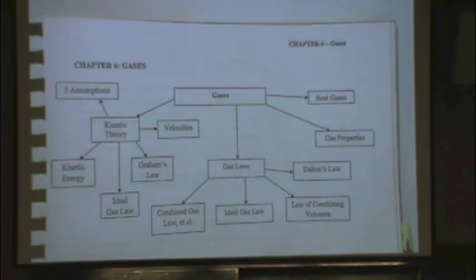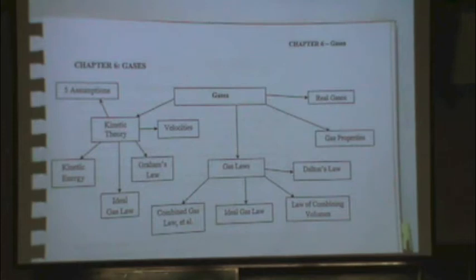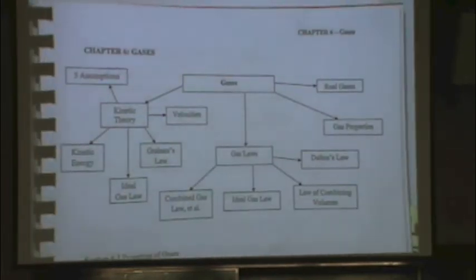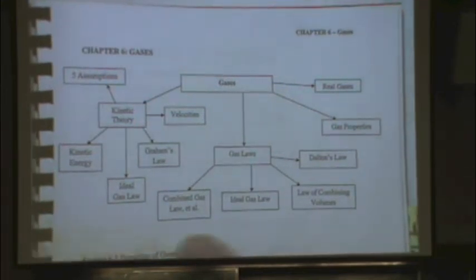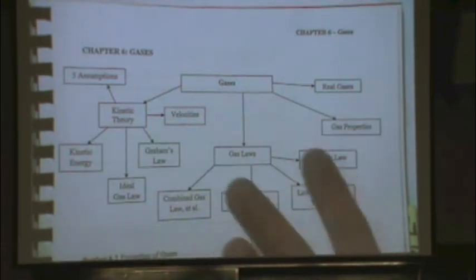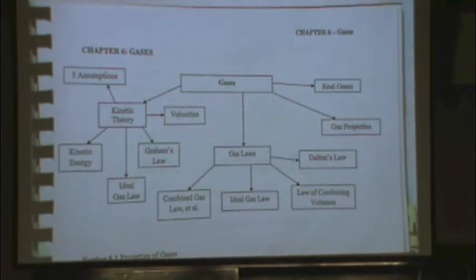The way I cover this is not going to be in the same order as your textbook. I'm going to cover section 1, and then jump over to section 7, which is kinetic theory. Then I'll finish that and come back to sections 2 through 6. The reason is kinetic theory is the derivation for everything we use in the first part of the chapter, so it makes more sense to find out where stuff comes from first.